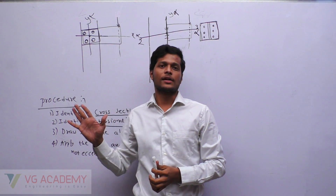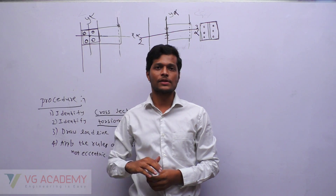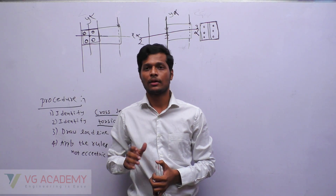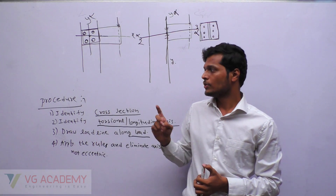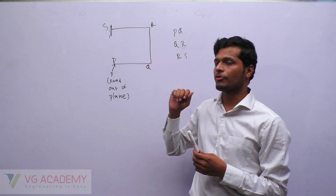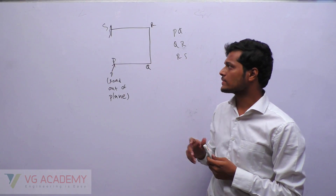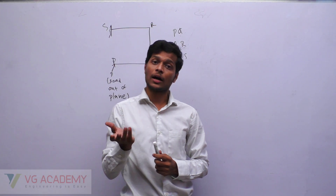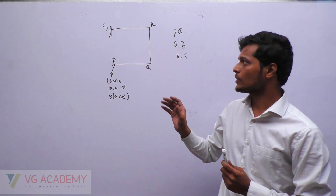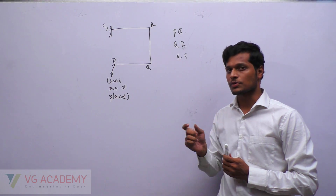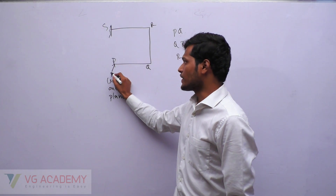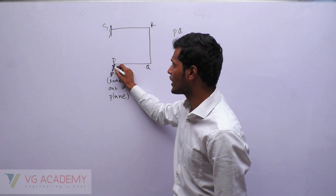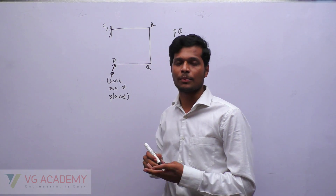There are several concepts where you can apply this trick, and in video lectures I will explain in detail how to use it efficiently. Now I will solve a previous GATE problem using this trick. Here is a question from GATE 2011: whether beams PQ, QR, and RS are subjected to bending, torsion, or both. Let us apply our trick. First, let me examine beam PQ — for beam PQ here is the load, it is a load lying out of the plane.